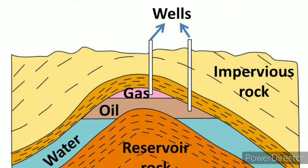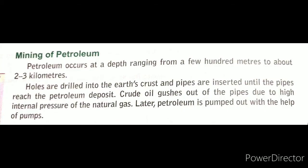The next topic is mining of petroleum. Petroleum can be present from a few hundred meters to 2-3 km depth. To obtain it, holes are drilled into the earth's crust using a drilling process, and then pipes are inserted until the pipes reach the location where the petroleum deposit is.